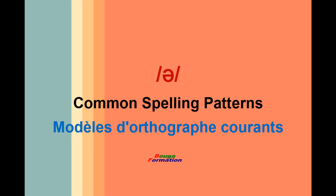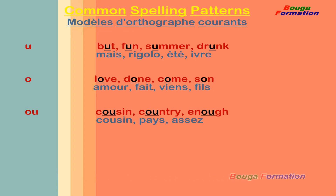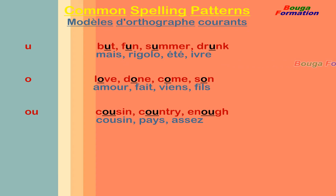The common spelling patterns for this sound are the letter U, as in but, fun, summer, drunk. The letter O, as in love, done, come, son.